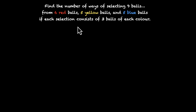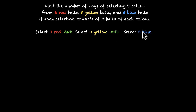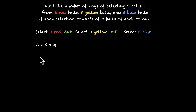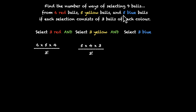So we have three different tasks and we have to do all three of them: we have to select three red balls, three yellow balls, and three blue balls — three plus three plus three is nine. For the red balls, we select and arrange: the first ball can be picked in six ways, the next in five, and the third in four — but the order does not matter, so we divide by three factorial. For the yellow balls: 5 × 4 × 3 divided by three factorial. And since we have five blue balls, the same as five yellow balls, the answer is the same there too: 5 × 4 × 3 divided by three factorial, all multiplied together.